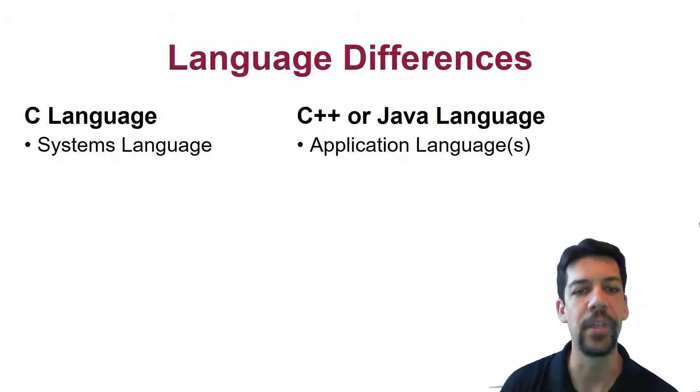The C++ or Java languages are, you might see them described as systems languages, but they're really application languages. These are where we develop our applications. They're class-based. They rely on an operating system. They do things at a much higher level than C, and they're meant to do that.